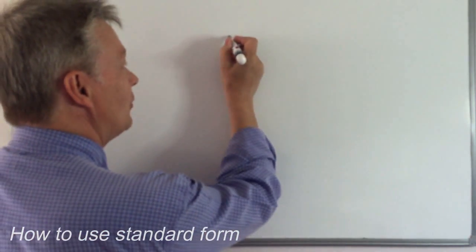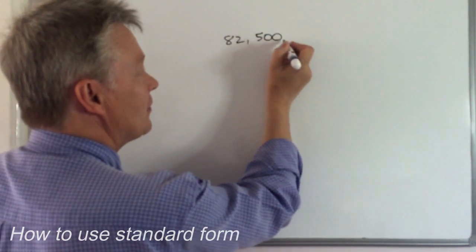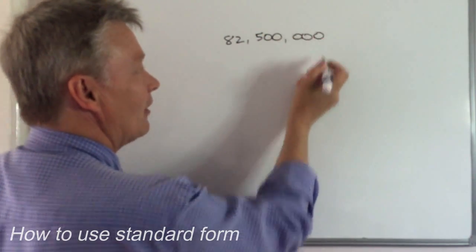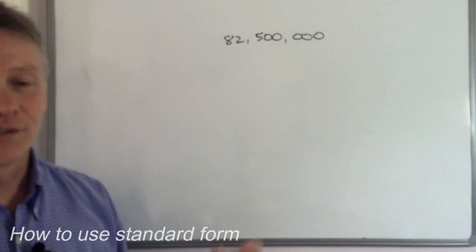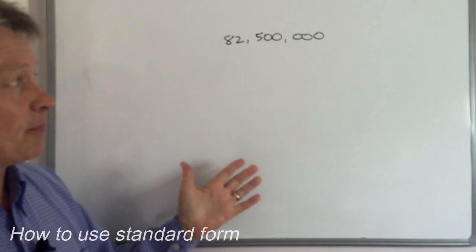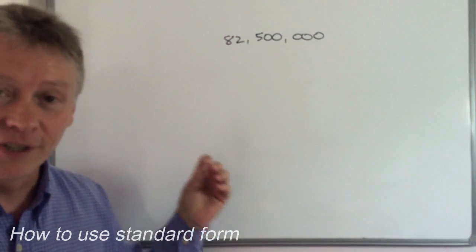So let's take an example. We've got something like 82,500,000 and you and I would probably say that's 82,500,000 and that's perfectly fine. The difficulty comes with standard form when the numbers are a little bit bigger.